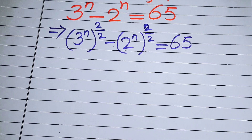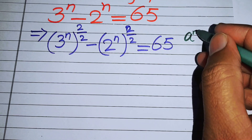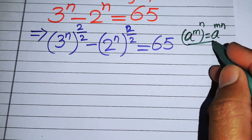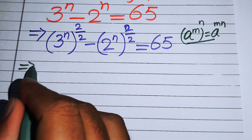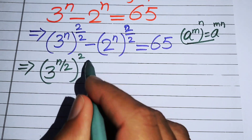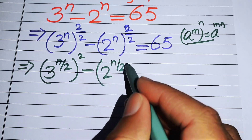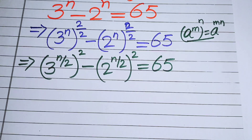In the next step we will use the exponential law: a to the power of m, to the power of n, equals a to the power of m times n. Applying this law, the expression becomes 3 to the power of n over 2, whole squared, minus 2 to the power of n over 2, whole squared, equals 65.